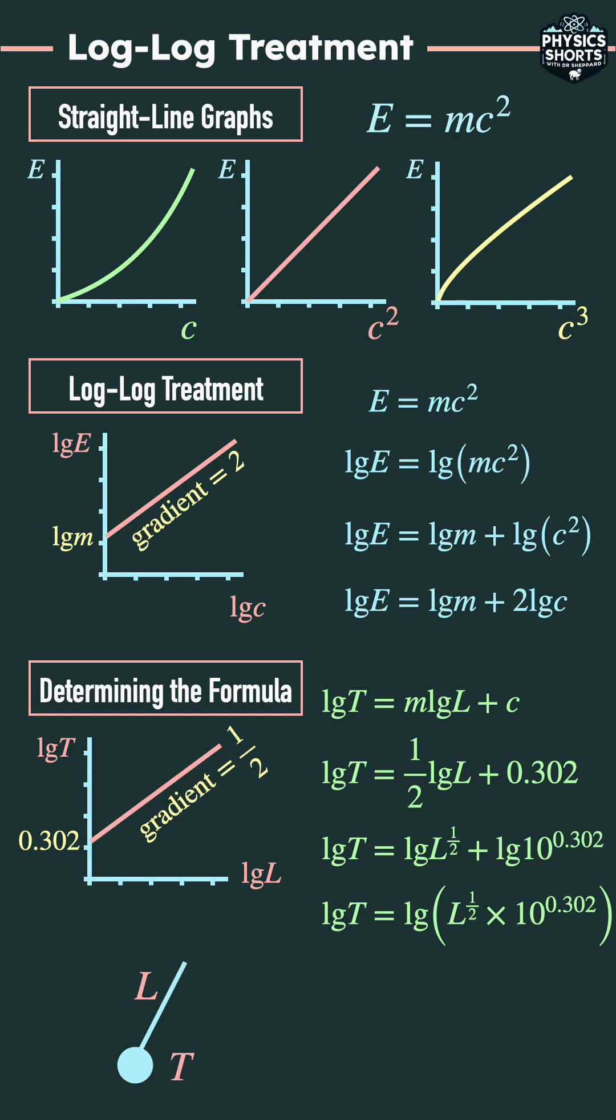We can raise those to the power of 10, so we got T equals 10 to the 0.302 L to the power of a half. Working that out, T equals 2 L to the half or T equals 2 root L.